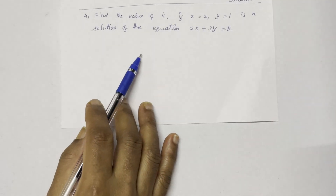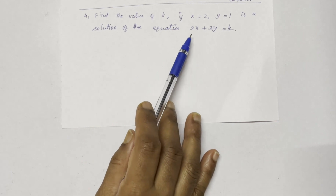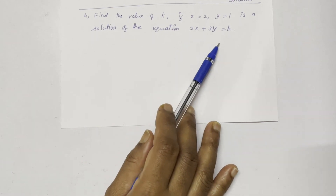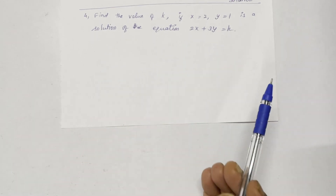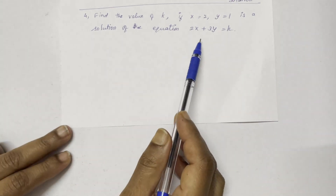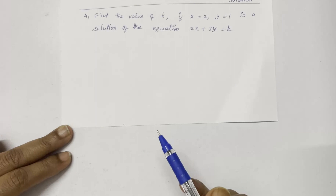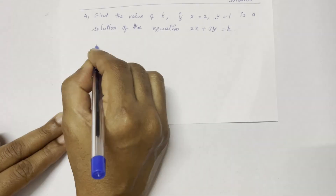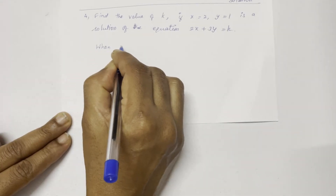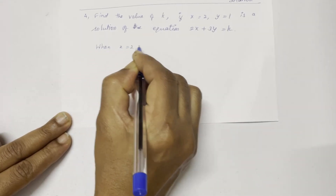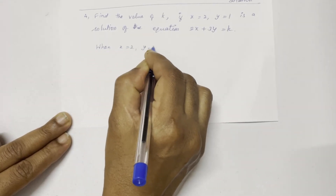Find the value of k if x equals 2 and y equals 1 is a solution of the equation 2x plus 3y equals k.